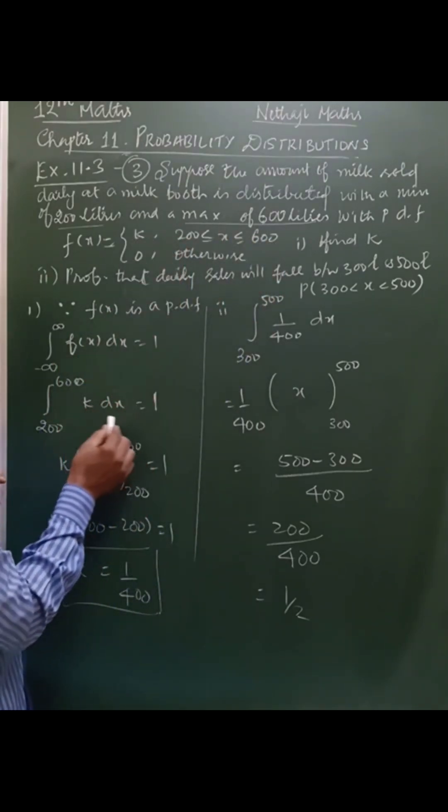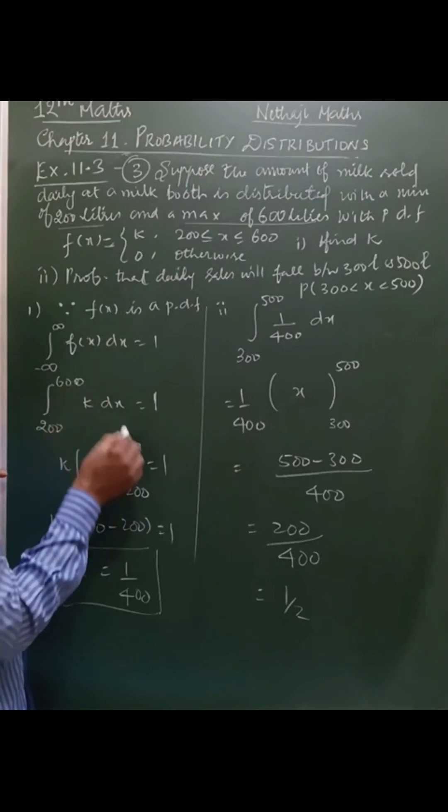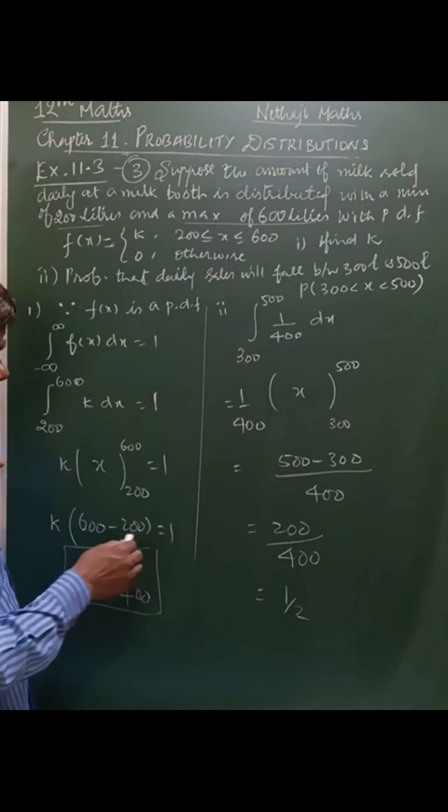k is a constant. We have to find the value of k. Upper limit is 600, lower limit is 200. Apply the limits. 600 minus 200 is 400.